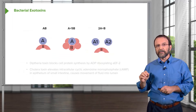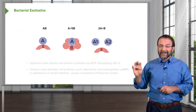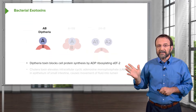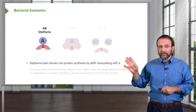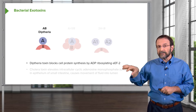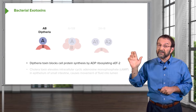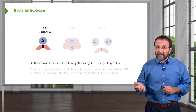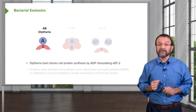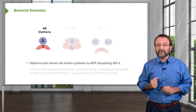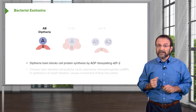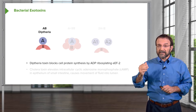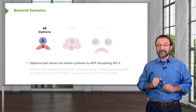Let's look at toxins in a bit more detail. They typically have an AB structure. The diphtheria toxin consists of one molecule of the A and one molecule of the B. The B is the receptor-binding component, and the A is the effector portion that actually has an effect on the host cell. The A portion of diphtheria toxin blocks cell protein synthesis — it ADP ribosylates an elongation factor for translation, EEF2, which stops host cell protein synthesis and kills the cell.